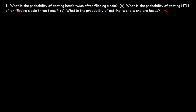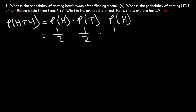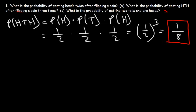Now what about part B? What is the probability of getting heads, tails, heads after flipping a coin three times? The order matters in this problem, but getting the answer is pretty straightforward. HTH is going to be the probability of getting heads on the first try, times the probability of getting tails on the second try, times the probability of getting heads on the third try. Each of these events has probability one half, so this is basically one half raised to the third power. Two to the third is eight, and one to the third is one. So the probability of this happening is one out of eight.